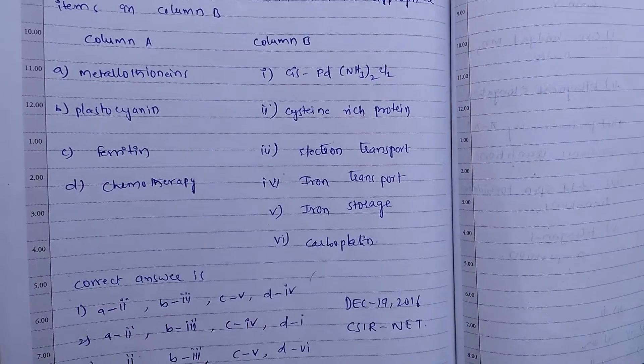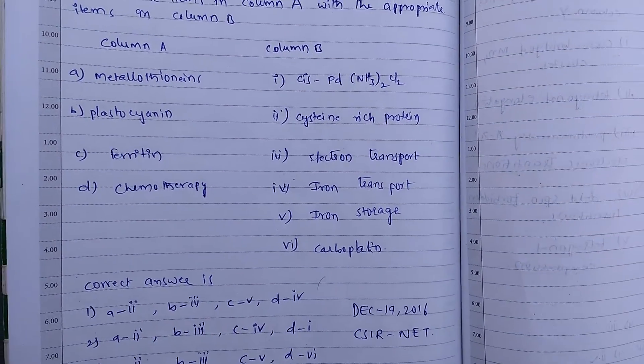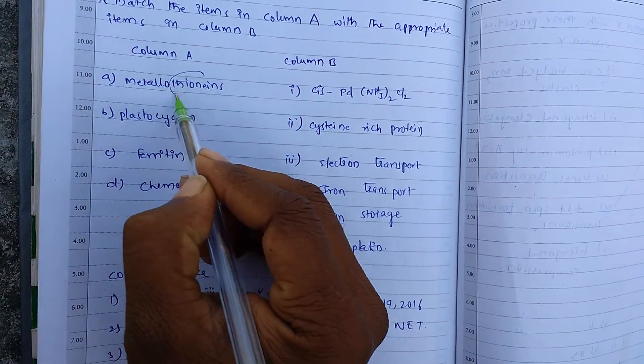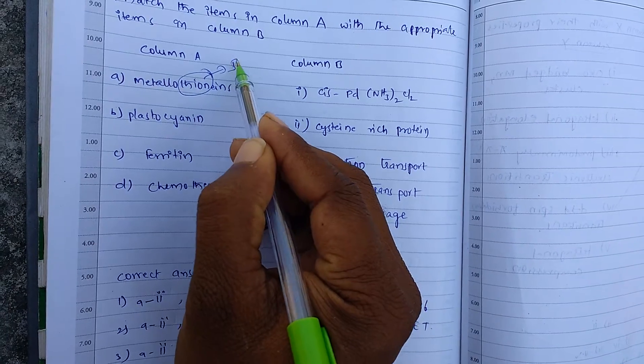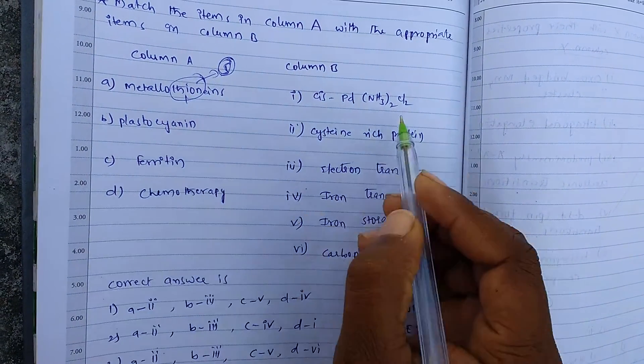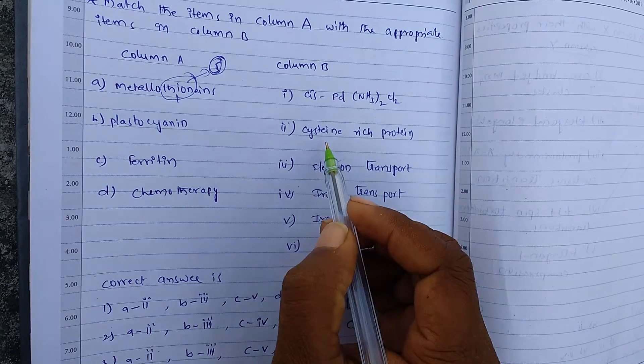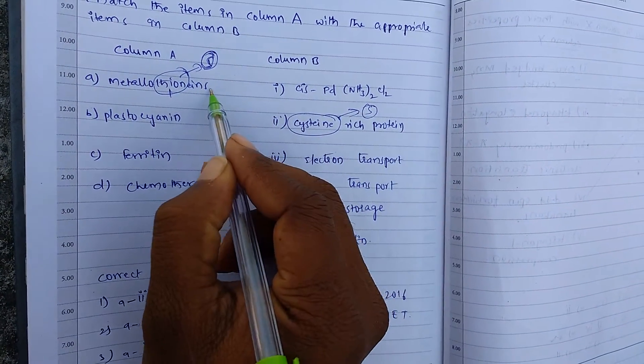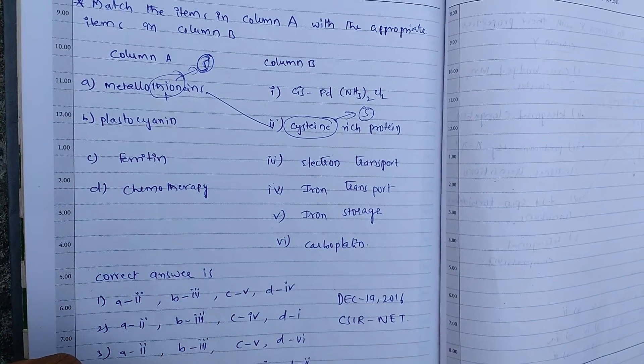Okay, so in this, metallothionines. So metallothionines, metallothione, that means it has sulfur. So thio, sulfur content. So from that we can easily conclude,